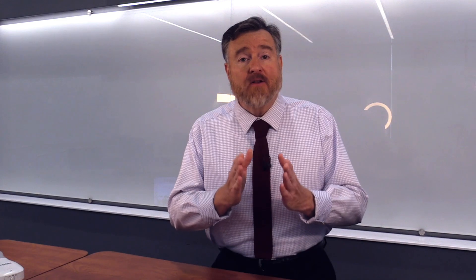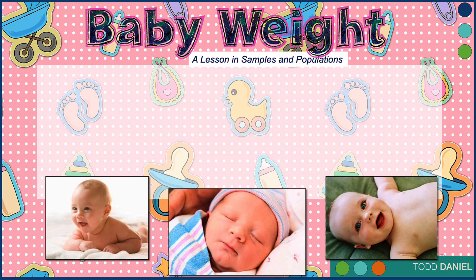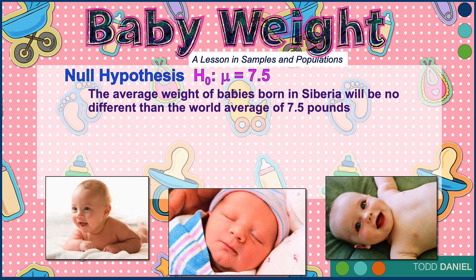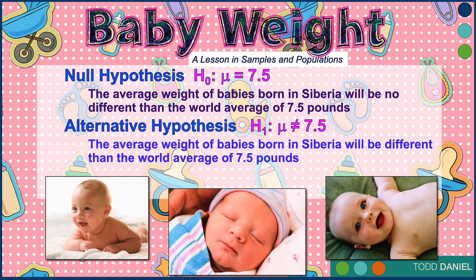Let's apply what we know about null and alternative hypotheses to our baby weight example. We write our null hypothesis as H sub 0 colon mu equals 7.5, specifying that the average weight of babies born in Siberia will be no different than the world average of 7.5 pounds. For the alternative hypothesis, we write H sub 1 colon mu does not equal 7.5 — that the average weight of babies born in Siberia will be different than the world average of 7.5 pounds. We are looking for statistically significant differences, but we have to specify before we begin testing exactly what criteria we are looking for to establish statistical significance. We'll do that in step 3 of hypothesis testing.